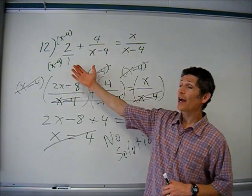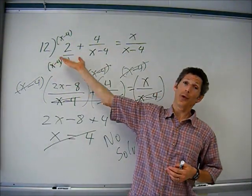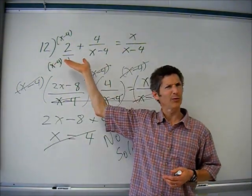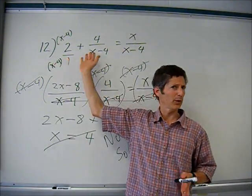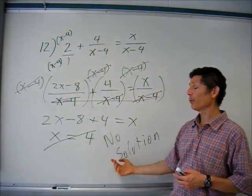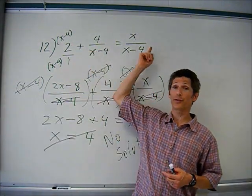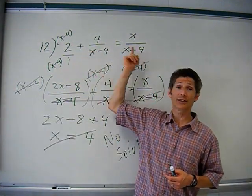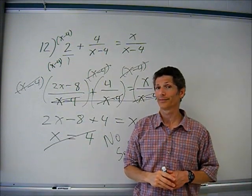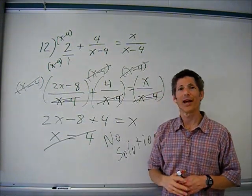If I were to graph this rational function, at x equals four there would be an asymptote — a place where this function does not exist.